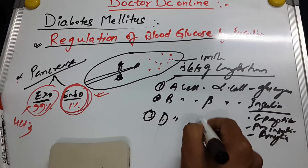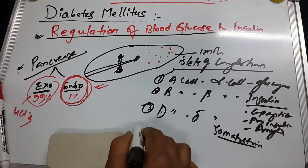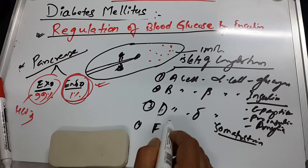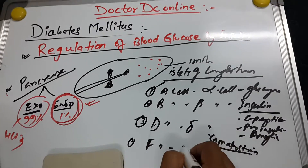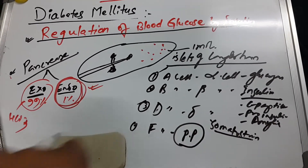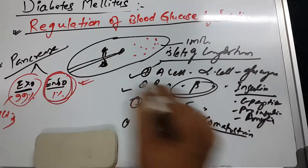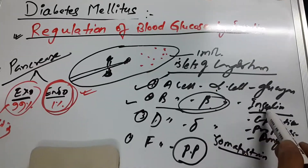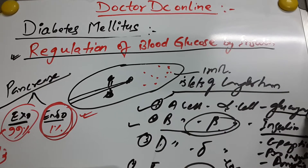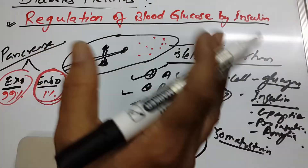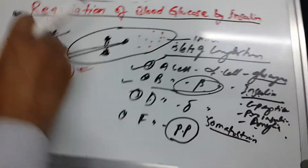The third type is delta cells, which release somatostatin — an inhibitor of both alpha and beta cells. There are also F cells, which produce pancreatic polypeptide. The most important for us are alpha and beta cells. Beta cells produce insulin, C peptide, proinsulin, and amylin, while alpha cells produce glucagon.